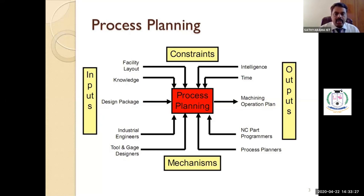The inputs from industrial engineers, from tool cage and designers (measurement engineers), from NC part programmers, and most importantly from process planning professionals — these inputs are used for creating a process plan. The outcome is a full-fledged systematic machining operation plan for a manufacturing process.